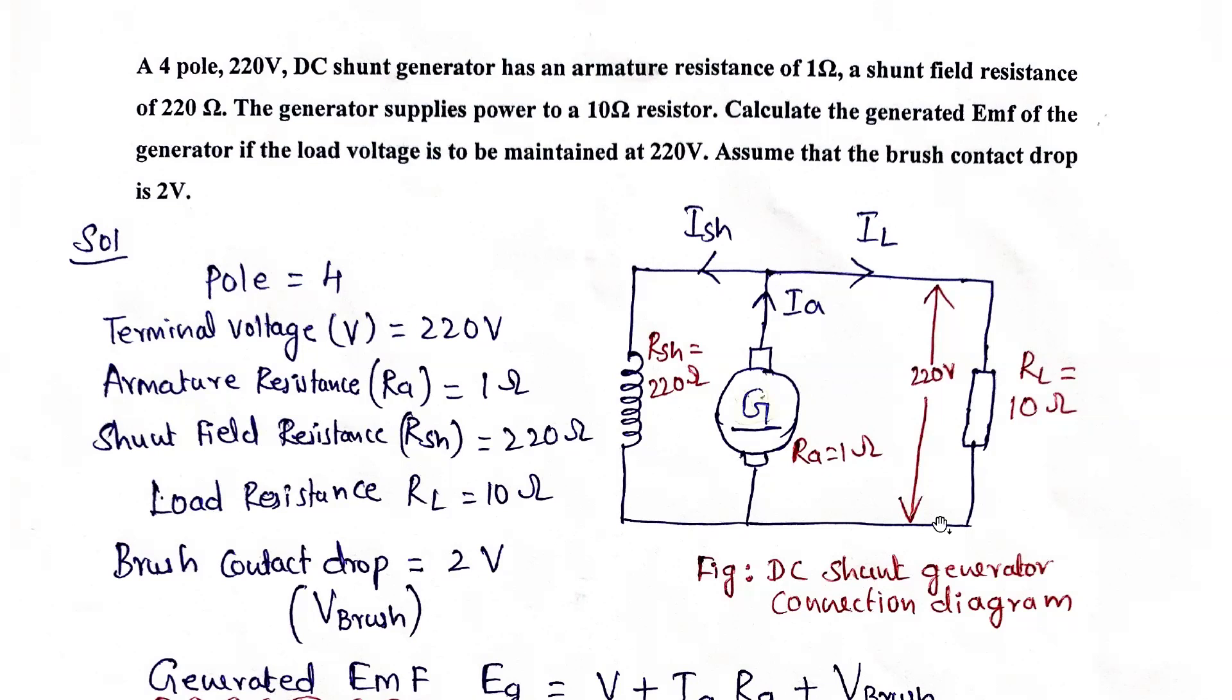Today, we are going to solve a problem on DC shunt generator. Take down this problem. We have a 4 pole, 220 volt DC shunt generator with an armature resistance of 1 ohm and a shunt field resistance of 220 ohms. The generator supplies power to a 10 ohm resistance.